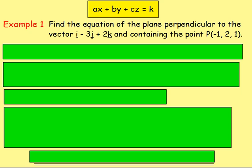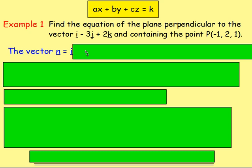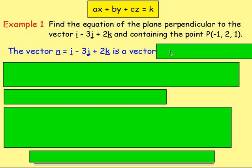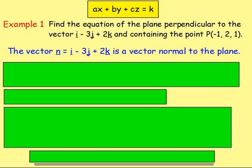Example 1: Find the equation of the plane perpendicular to the vector i minus 3j plus 2k and containing the point P with coordinates negative 1, 2, and 1. The first thing we need is the normal vector. The plane is perpendicular to this vector, so we know it is a normal vector. Therefore n equals i minus 3j plus 2k, which is the vector normal to the plane.